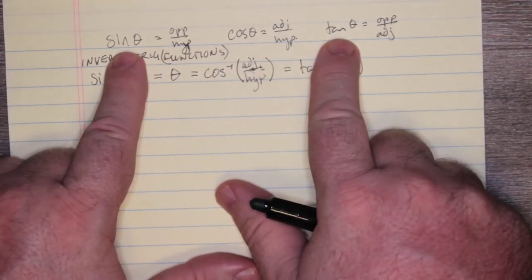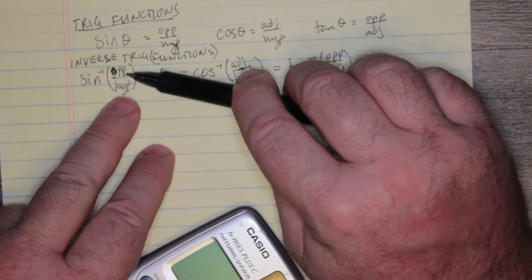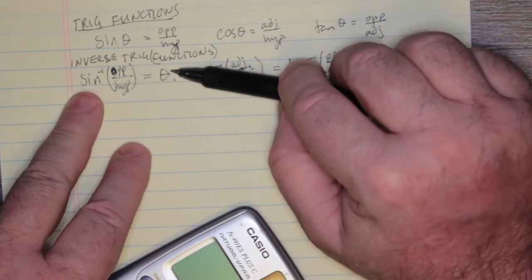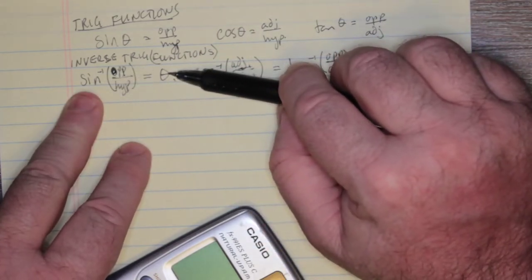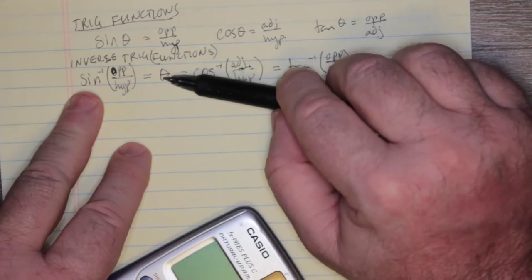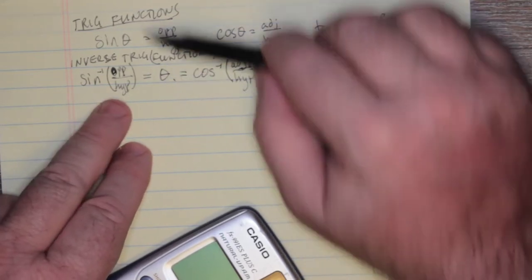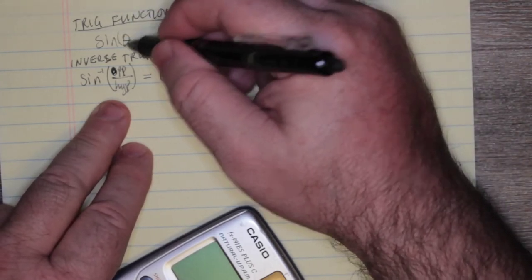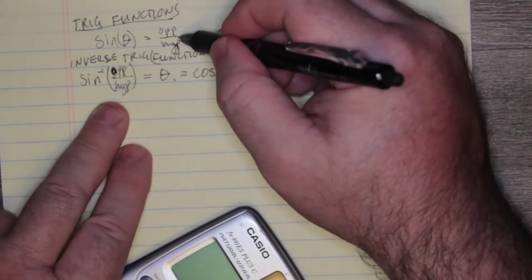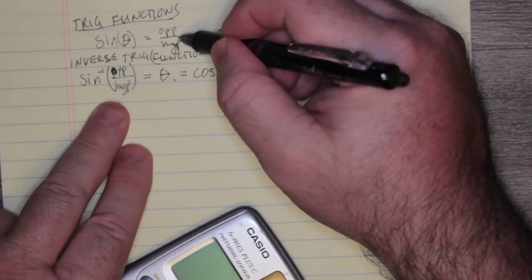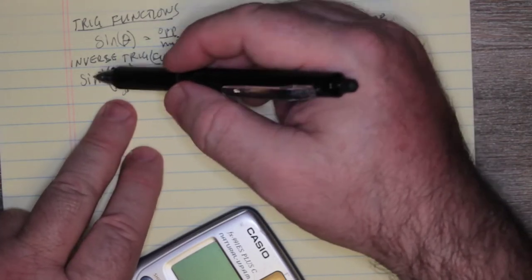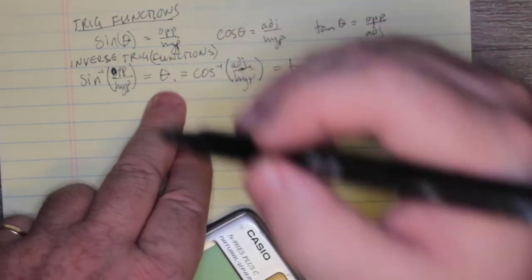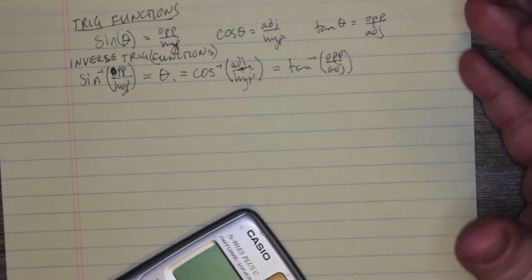Sine, cosine, and tangent are none of them one-to-one. If I knew the trig ratio for sine but didn't know the angle, I could feed that into the inverse of sine and figure out the angle. The input value of sine is the angle theta and the output is the trig ratio opposite over hypotenuse, whereas for the inverse function the input is opposite over hypotenuse and the output is the angle — it's completely backwards.